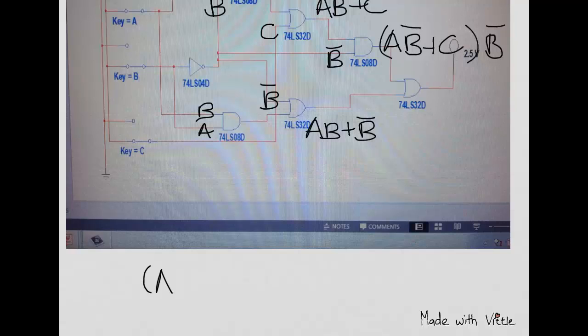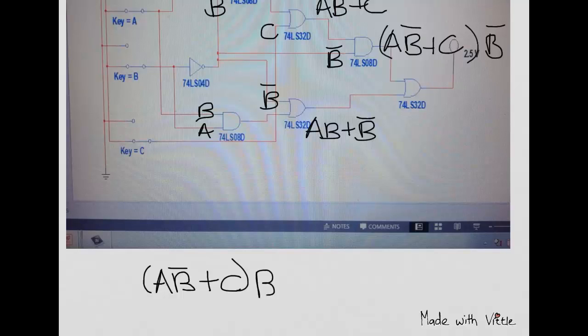We're going to have A and not B, OR, C, and that goes into an AND gate with not B, and then it goes, it's ORed together with A, B, OR, not B.